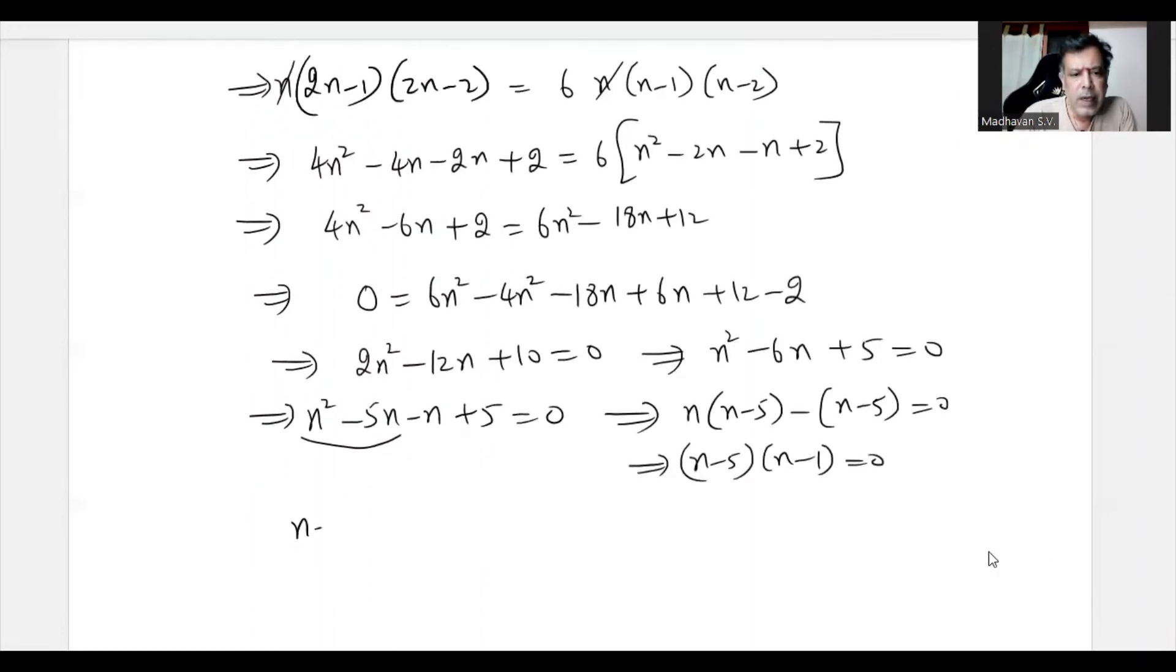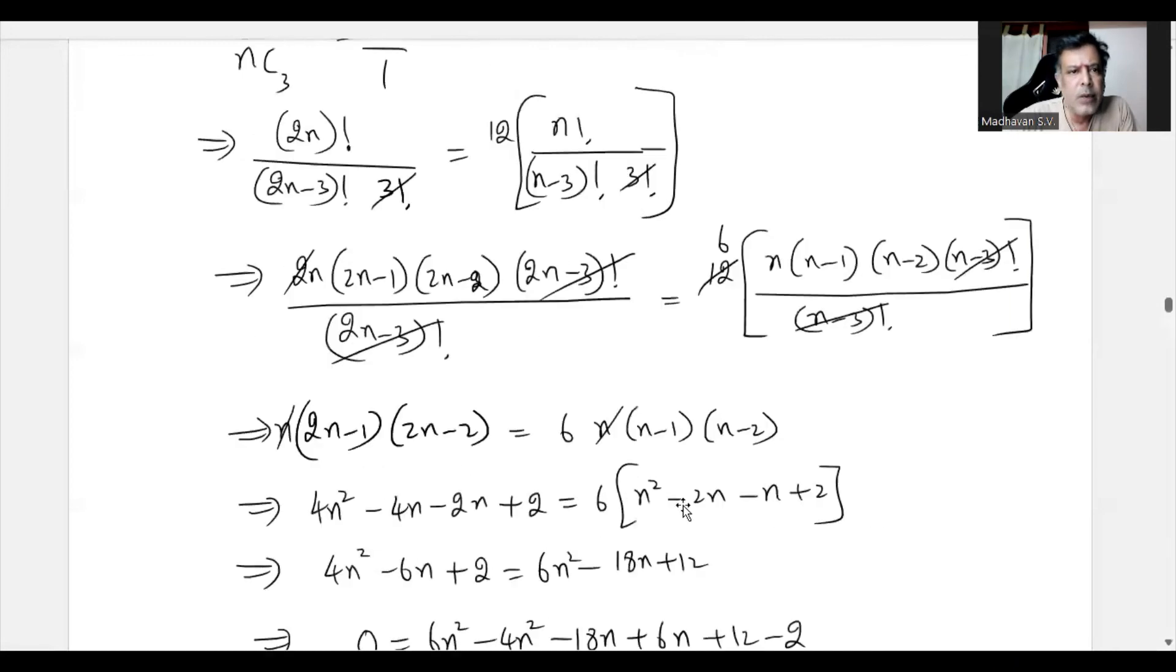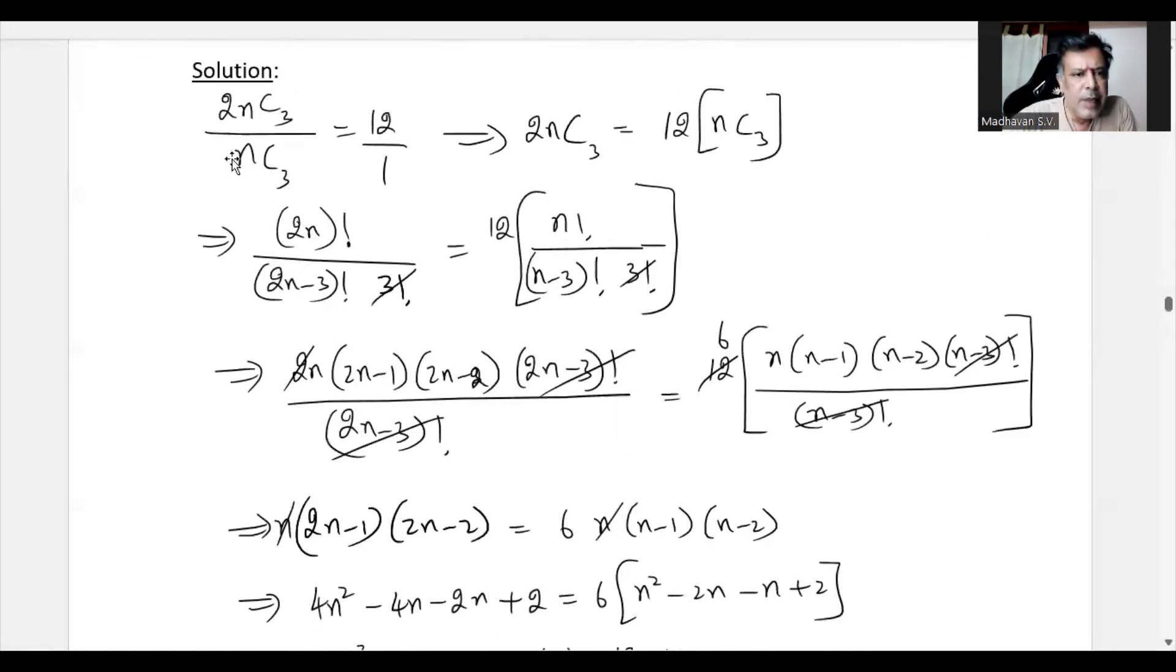Now, N equal to 1 or 5, but we may notice N equal to 1 is not valid. Why? Why not valid? We will go back. If I put N as 1, what will happen here? N will be lesser than this R, means NC3, 1C3 it will become.